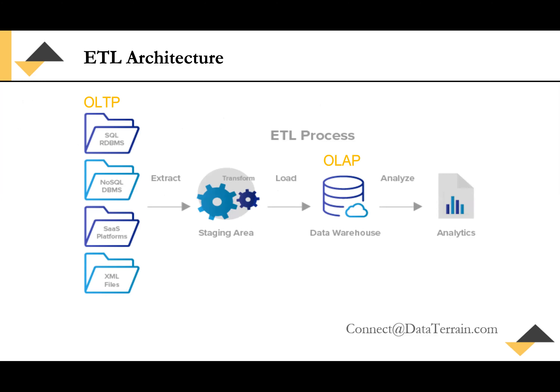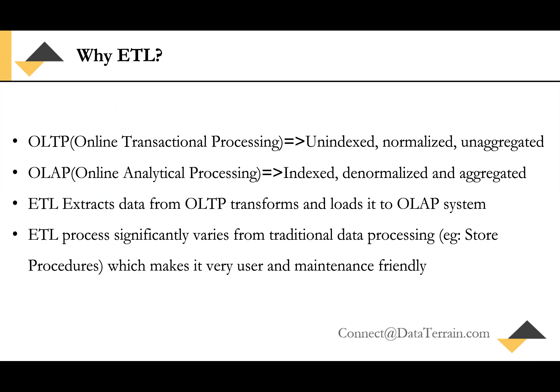This is the ETL architecture. We are extracting data from an OLTP system, doing the transformation in the intermediate layer, and then loading it to an OLAP system, over which we run BI tools for making business decisions. ETL is needed because the OLTP system is not meant for reporting or data analytics — it is unindexed, normalized, and unaggregated, because indexing slows down OLTP processing like data inserts.